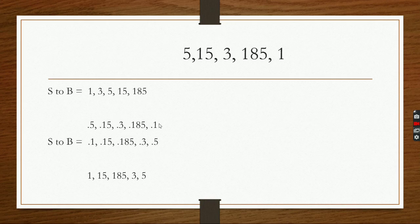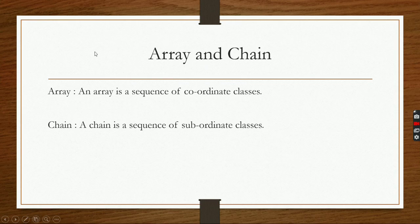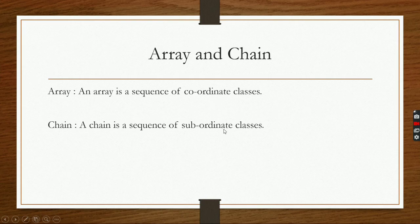Now we will understand what is array and what is chain in the next slide. An array is a sequence of coordinate classes. A chain is a sequence of subordinate classes. Now, what is a coordinate class? What is a subordinate class? We will understand that — coordinate class and subordinate class — in the next slide.